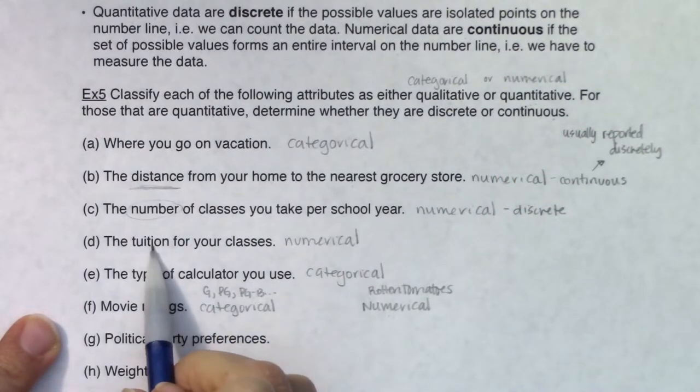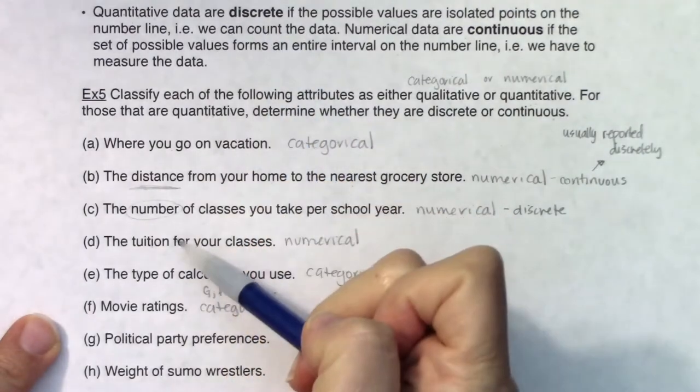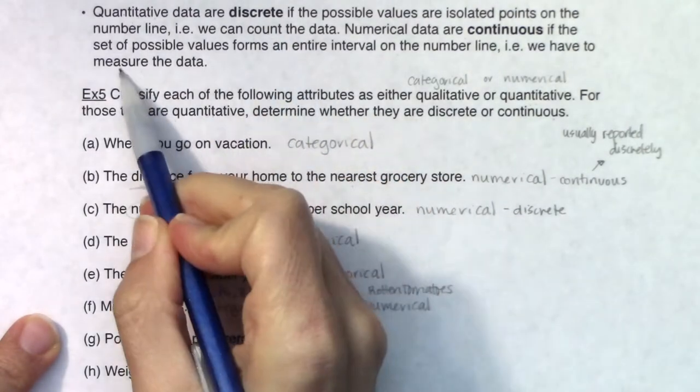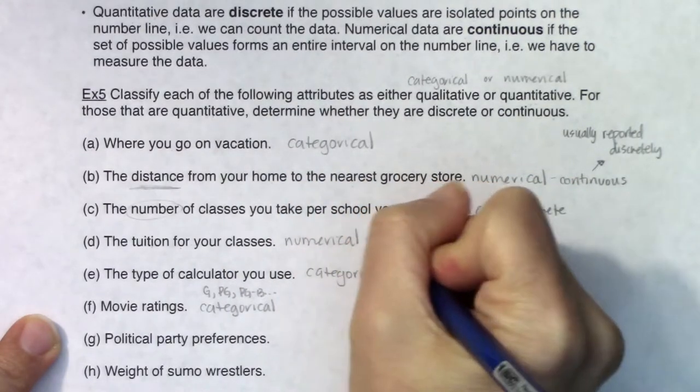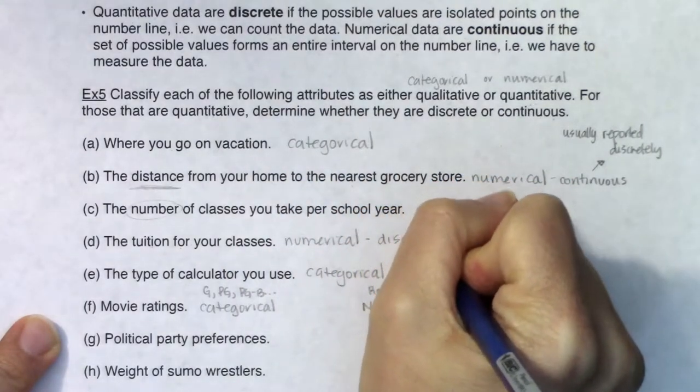In terms of tuition, it's going to be money. Do I count my money or do I measure my money? I count my money. Most of us count our money, making this numerical discrete.